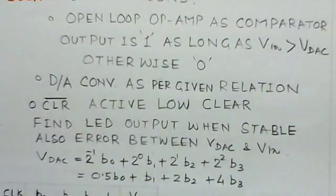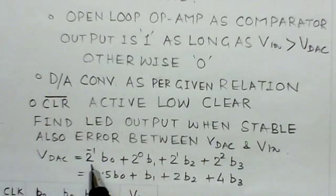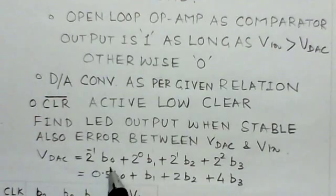Now we see this relation. This is the VDAC output. After simplification, you get VDAC equals 2 to the power minus 1 times b0, plus 2^0 times b1, and so on. So you get 0.5b0 plus b1 plus 2b2 plus 4b3.